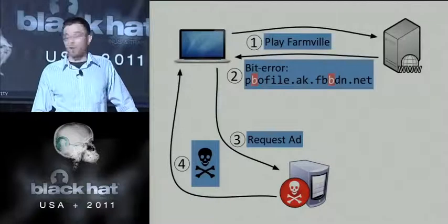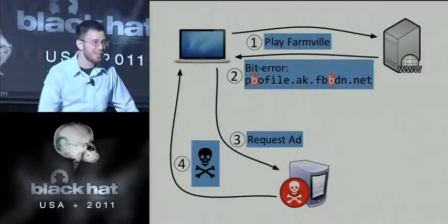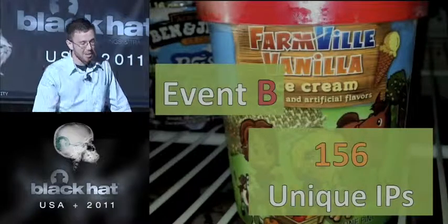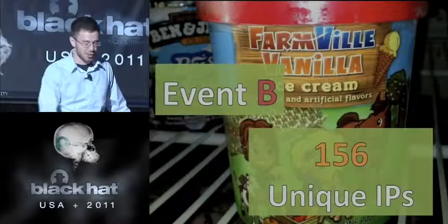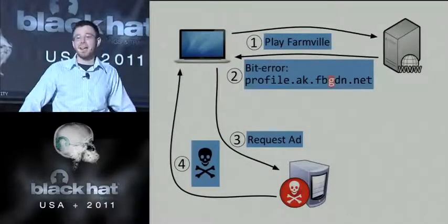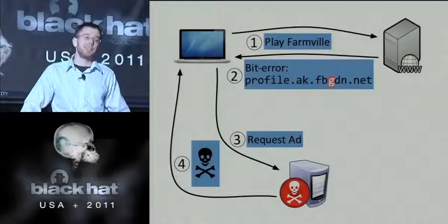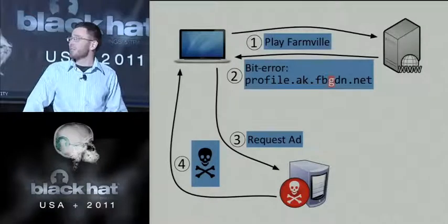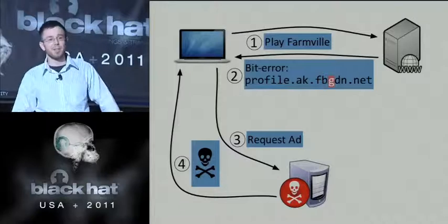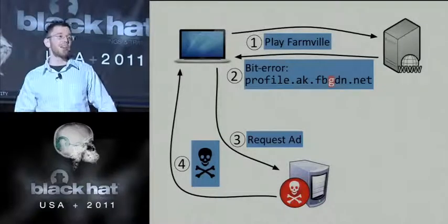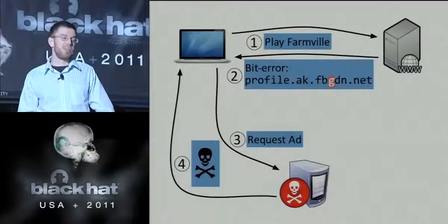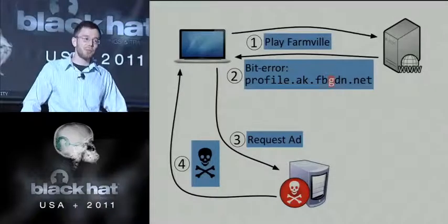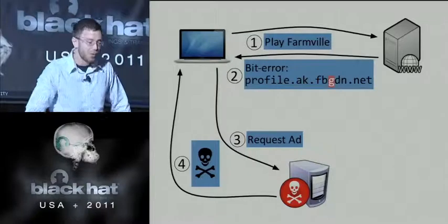Event B, affecting 156 different unique IPs, was also FarmVille — essentially the same thing with a different bit error. This time, instead of affecting fbbdn.net, the bit error changed fbcdn.net to fbgdn.net, which I also own. People would go play FarmVille, request an ad from Facebook, a bit error would occur, it would get cached, and then get served to users until that cached object was refreshed. If you're developing caching systems that use memory cache, you should really make sure that what you put in is what you get out.